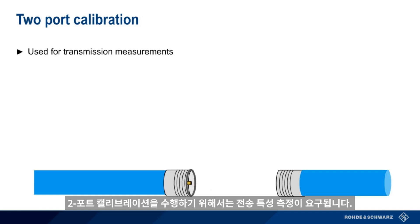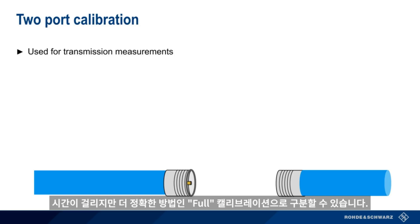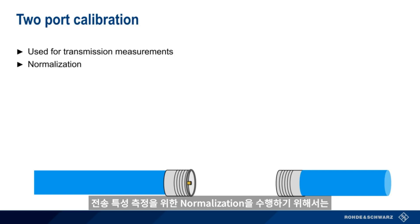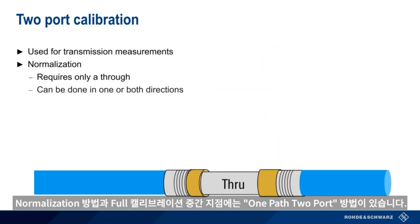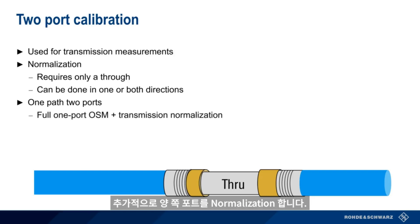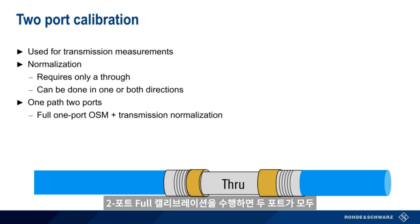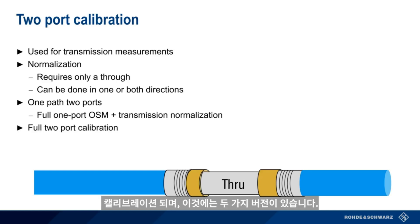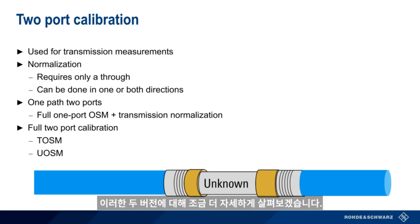Two-port calibrations are used for transmission measurements. Just like one-port calibration, we can make the distinction between the faster, less accurate normalization and the slower, but more accurate, full calibration. As before, normalization for transmission measurements requires only a single calibration standard, in this case a through. The calibration can be done in one or both directions. Halfway between normalization and full calibration is something called one-path two-port, which is basically a combination of our full one-port open-short-match, plus a transmission normalization. Because we're doing the full calibration on one port, this only improves our results in one direction. If we do the full calibration on both ports, this is a full two-port calibration. There are two variants of this: the through-open-short-match and the unknown-open-short-match.